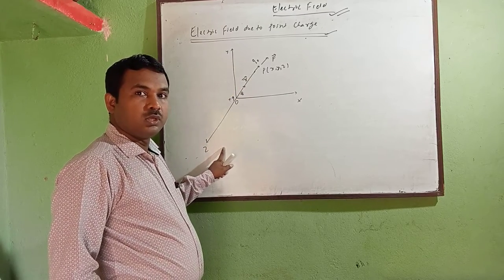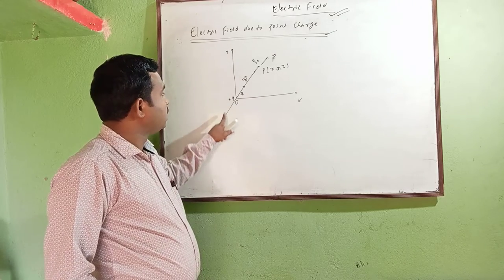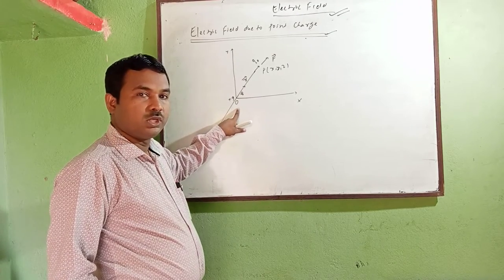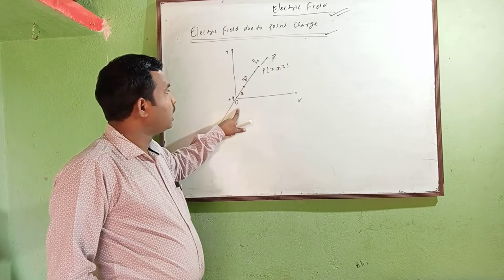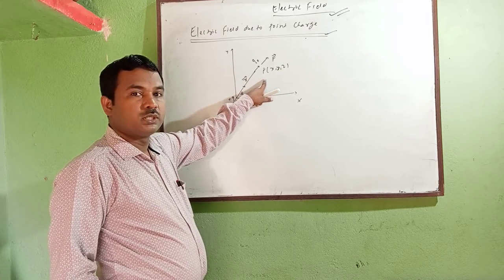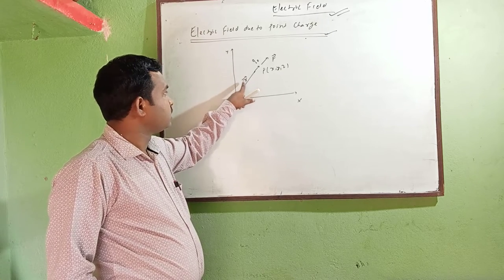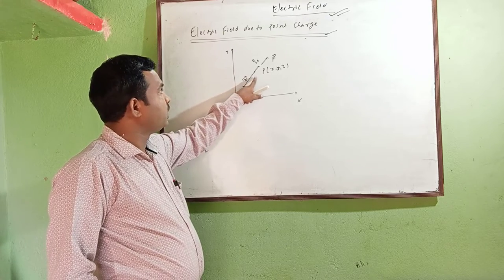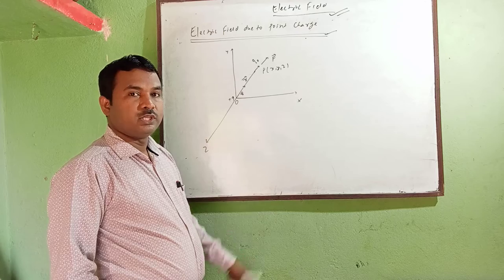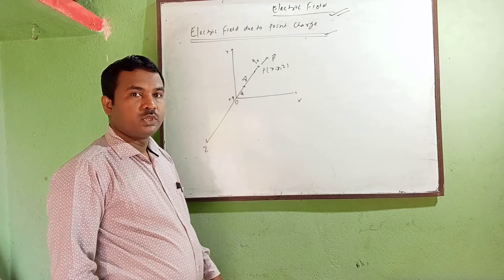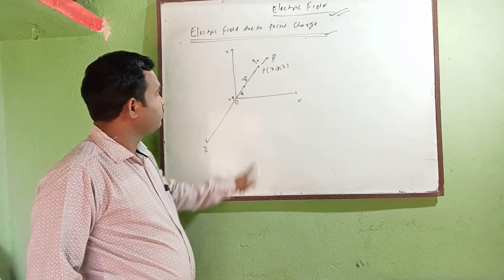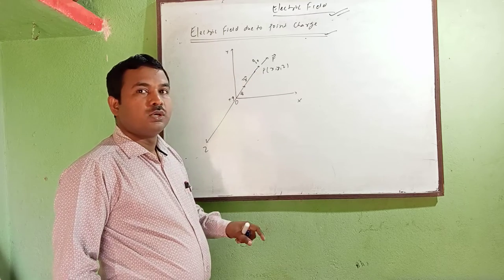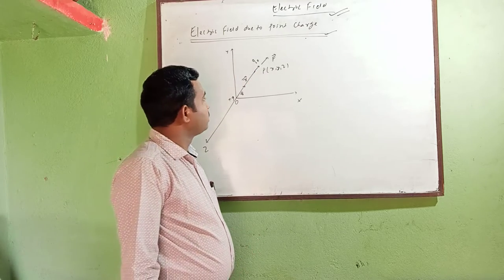A point charge plus q is placed at the origin of the coordinates, and P is a point at a distance vector r, where the test charge is placed. So there will definitely be a force experienced due to this point charge.